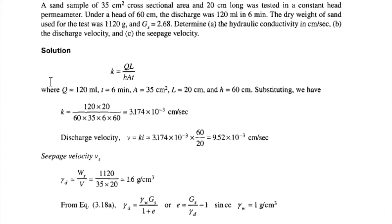Hello friends, today we are going to see a problem related to the constant head permeability test. A sand sample of 35 cm² cross-section area and 20 cm long was tested in a constant head permeability setup. Under a head of 60 cm, the discharge was 120 ml in 6 minutes. The dry unit weight of sand used for the test was 1120 grams and specific gravity GS equals 2.68.